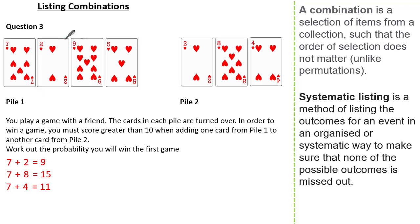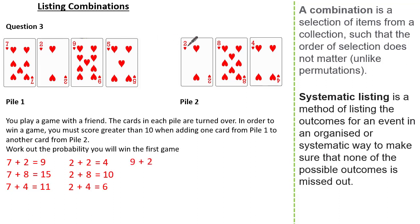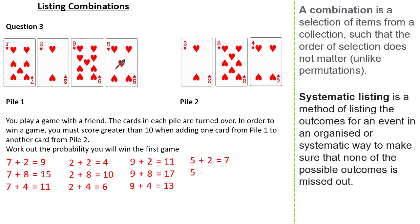Now let's look at our starting number being 2: we could get 2 and 2, 2 and 8, or 2 and 4. Starting with 9: we could get 9 and 2, 9 and 8, or 9 and 4. Lastly, starting with 5: we could get 5 and 2, 5 and 8, or 5 and 4. Here you can see our 12 different combinations.